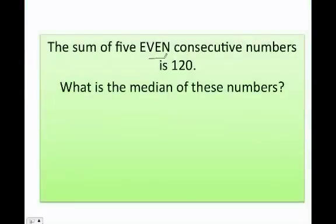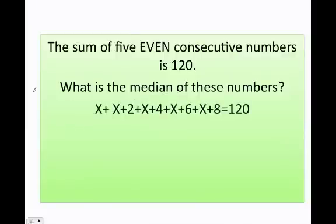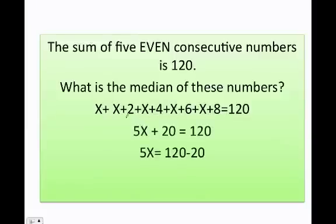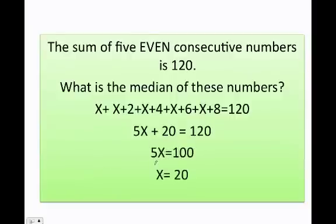The sum of five even consecutive numbers is 120. What is the median? Remember, for even numbers: x, x plus 2, x plus 4, x plus 6, and x plus 8. That gives us 5x plus 20 equals 120. So 120 minus 20 equals 100, and dividing by 5 gives x equals 20.